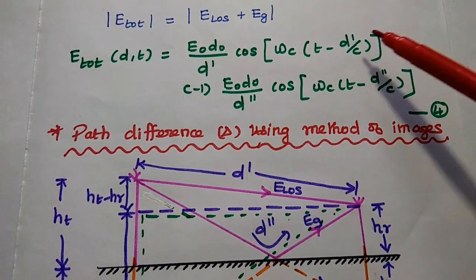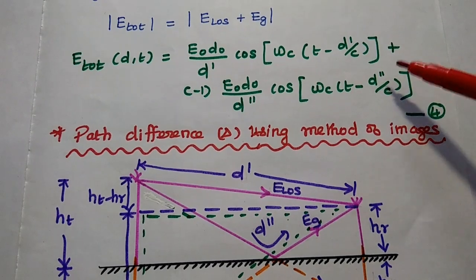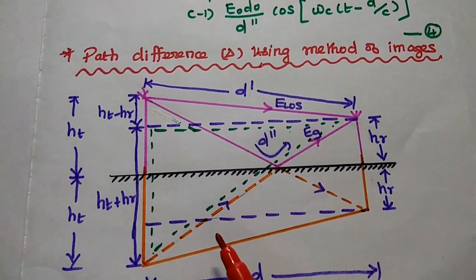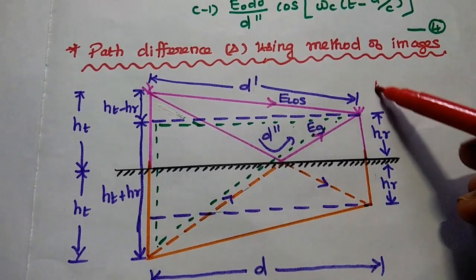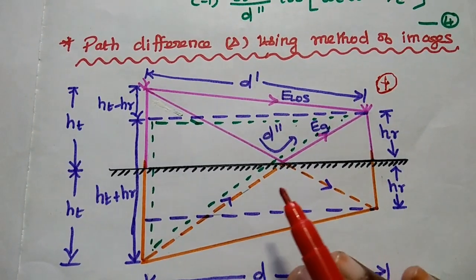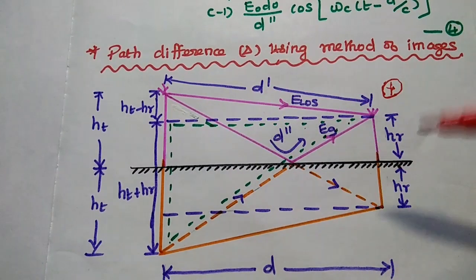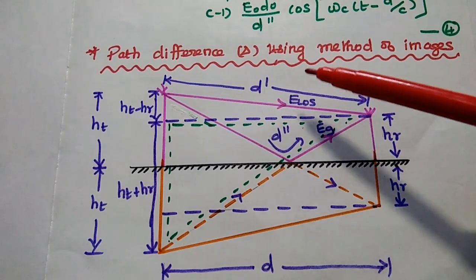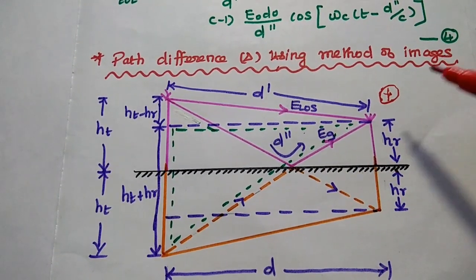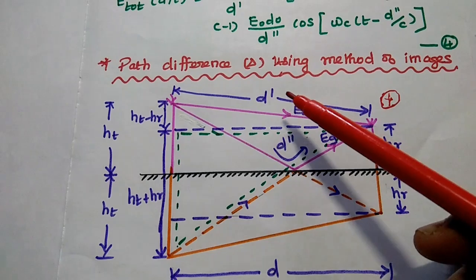We have two paths: one is the direct path with distance d', and the next is the reflected path with distance d''. Next, we find the path difference between the direct path and the ground reflected path using the method of images. This method is very important to analyze the path difference. Above the ground line, we have the actual two-ray model with the transmitting antenna, receiving antenna, a direct path of distance d', and a reflected path of distance d''.